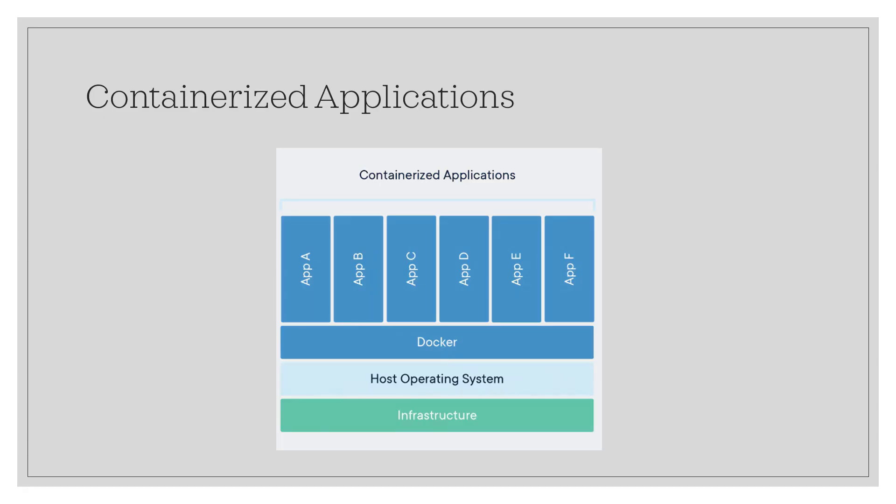So what are containerized applications? This diagram depicts that in a nutshell. We have a physical infrastructure of a machine, on top we have the host operating system, and then we have something as a middleman between our containers and the operating system — helping us to build those containers. Here I have depicted Docker. Just like for VMs we need a hypervisor, similarly to create containers we need some tool or technology that understands how to create an image and create a container — that's Docker.